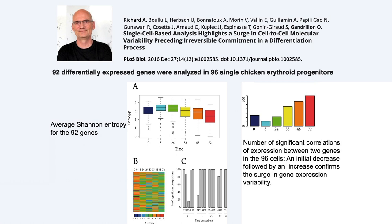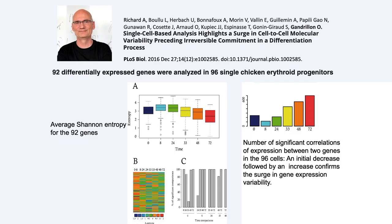The experiment was done by Olivier Gandrillon and his team, with whom I collaborated. 92 differentially expressed genes — meaning genes that either become expressed or repressed during cell differentiation — were analyzed in 96 chicken blood differentiating cells. As can be seen on panel A, eight hours after cells were triggered to differentiate, we observed a peak in the variability. This curve shows the average variability of gene expression at different time points. As predicted, eight hours after cells were triggered, we observed a peak of variability followed by a decay.